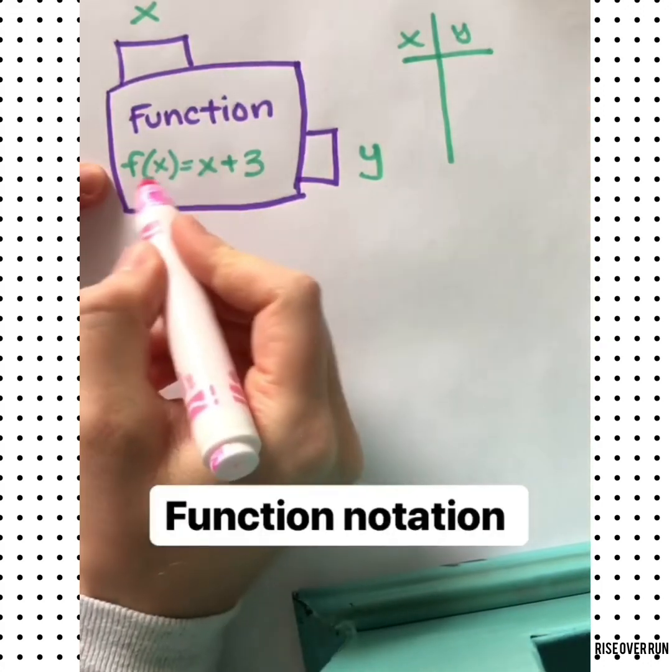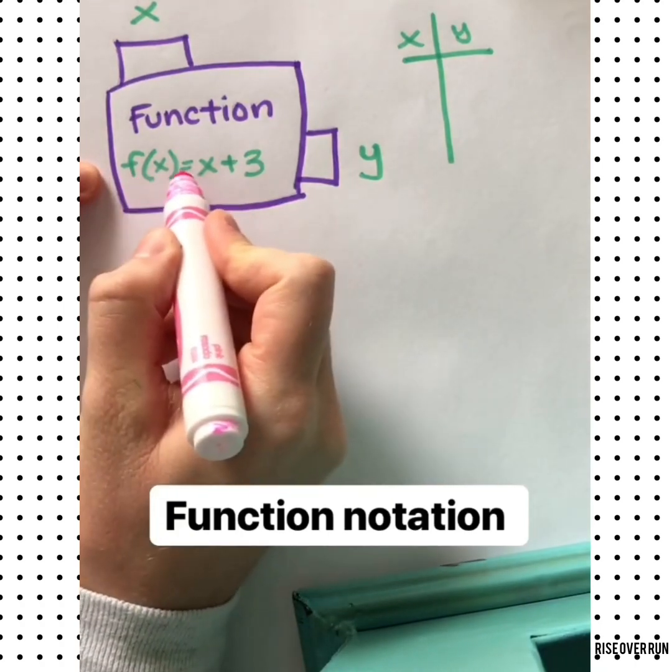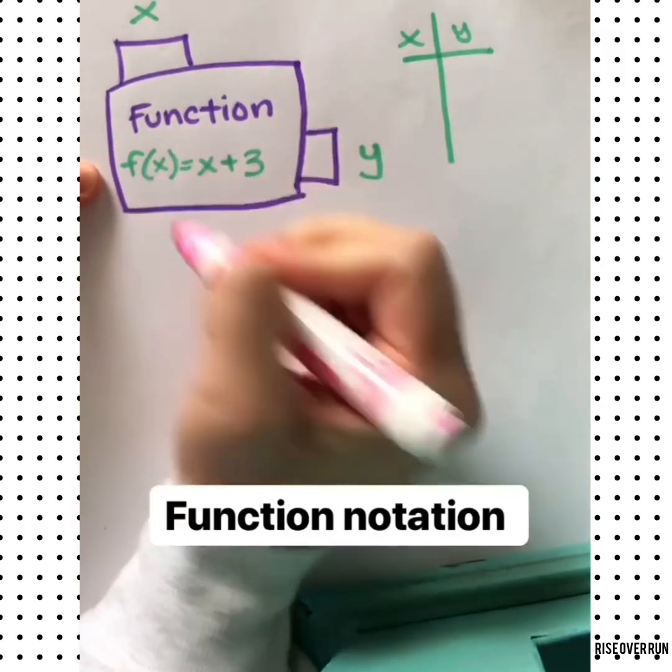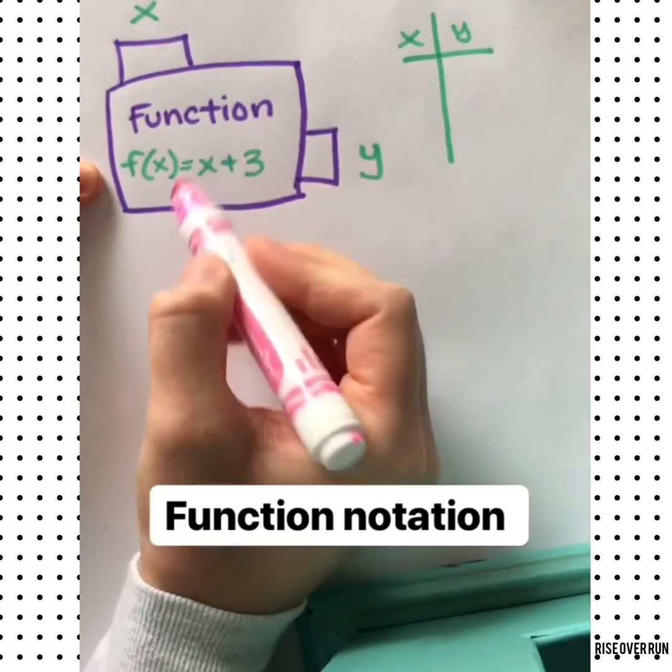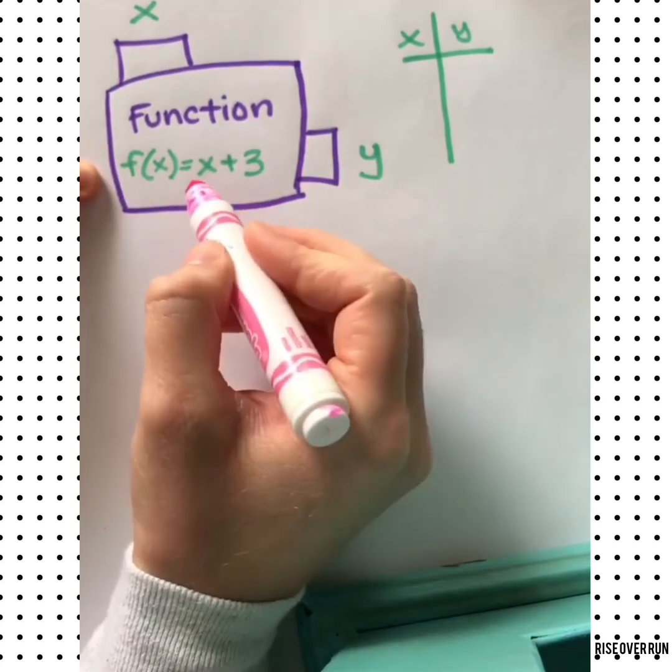This is called function notation. To read this you say f of x. This is typically where we used to put y, but now we'll put f of x. So this function is read f of x equals x plus 3.